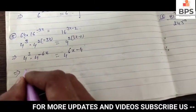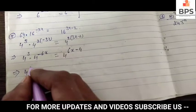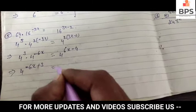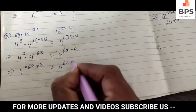Simplifying, we get 4 to the power minus 6x plus 3 equals 4 to the power 6x minus 4.